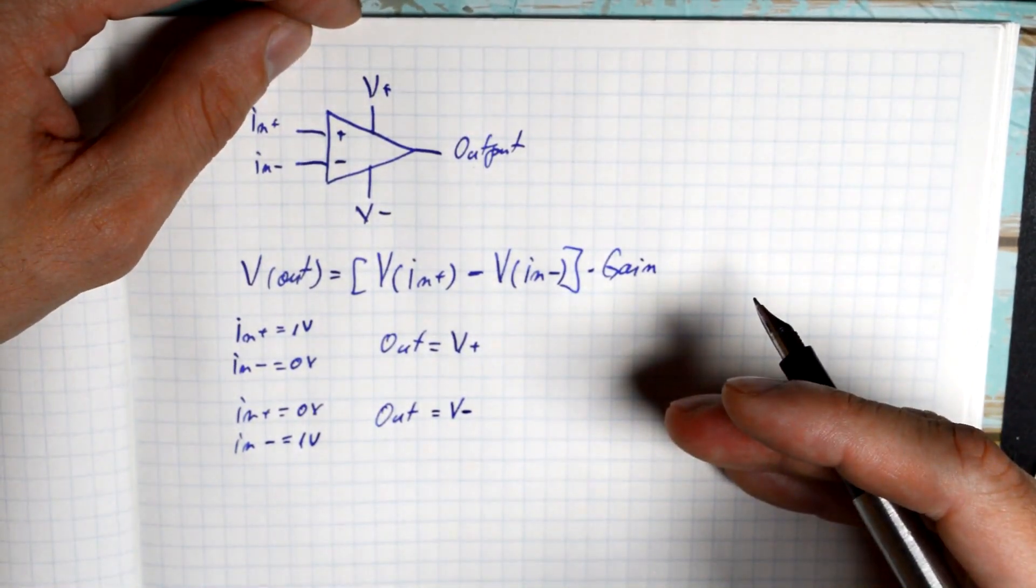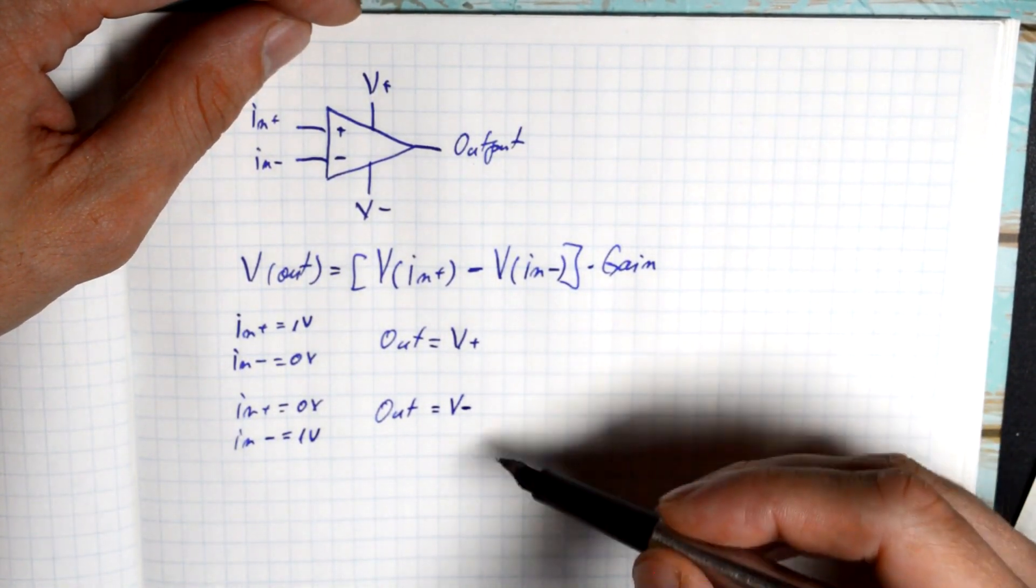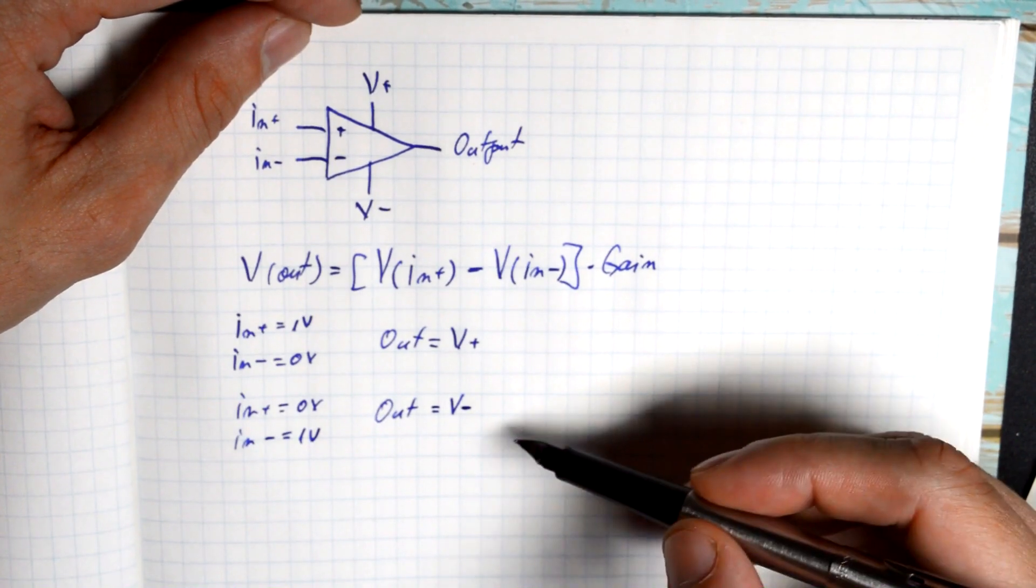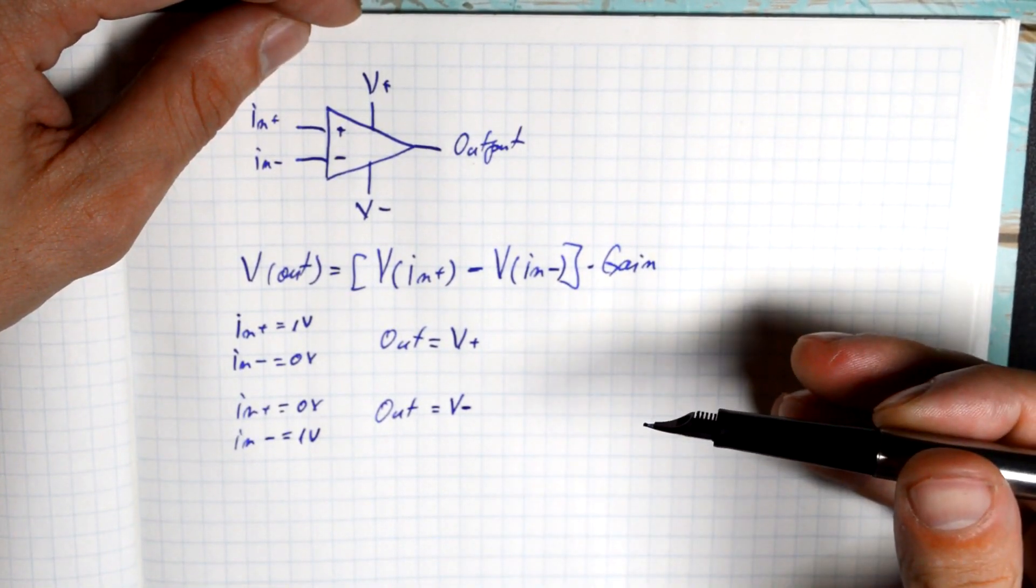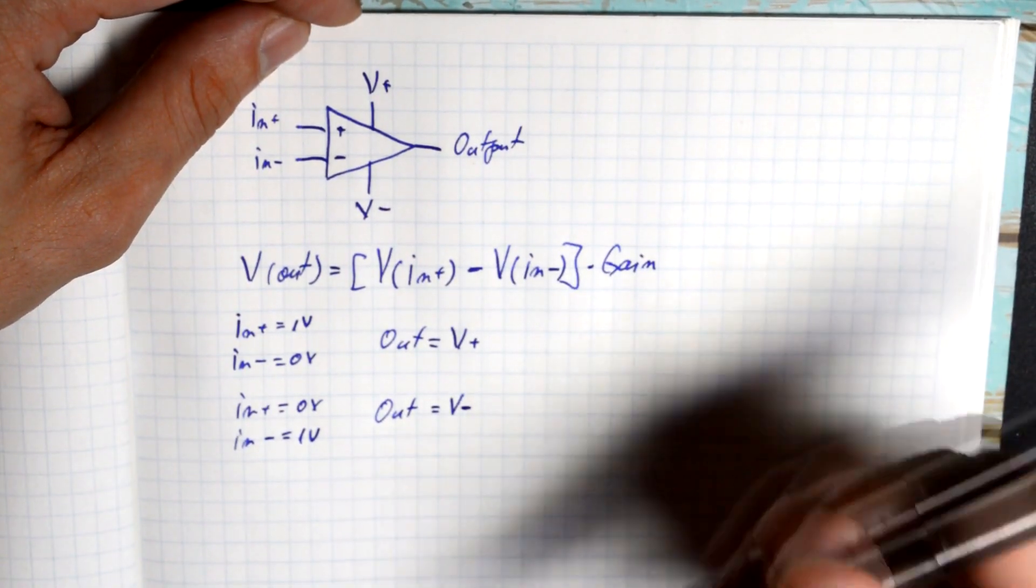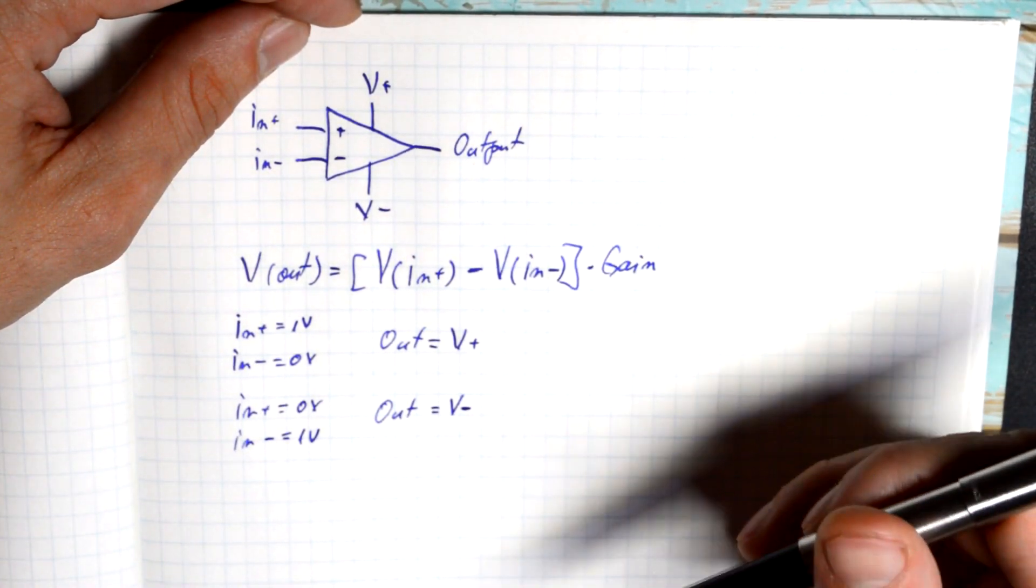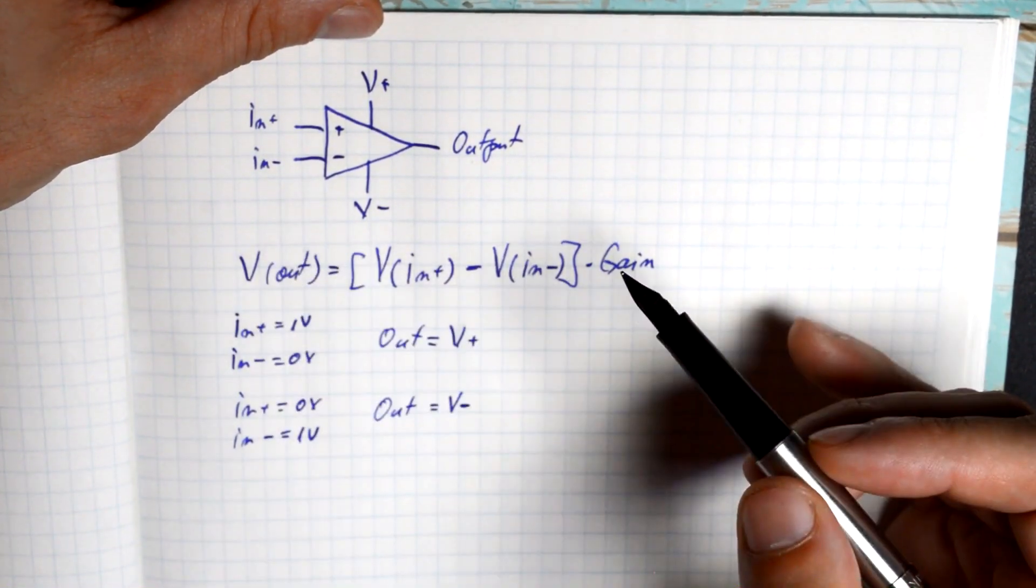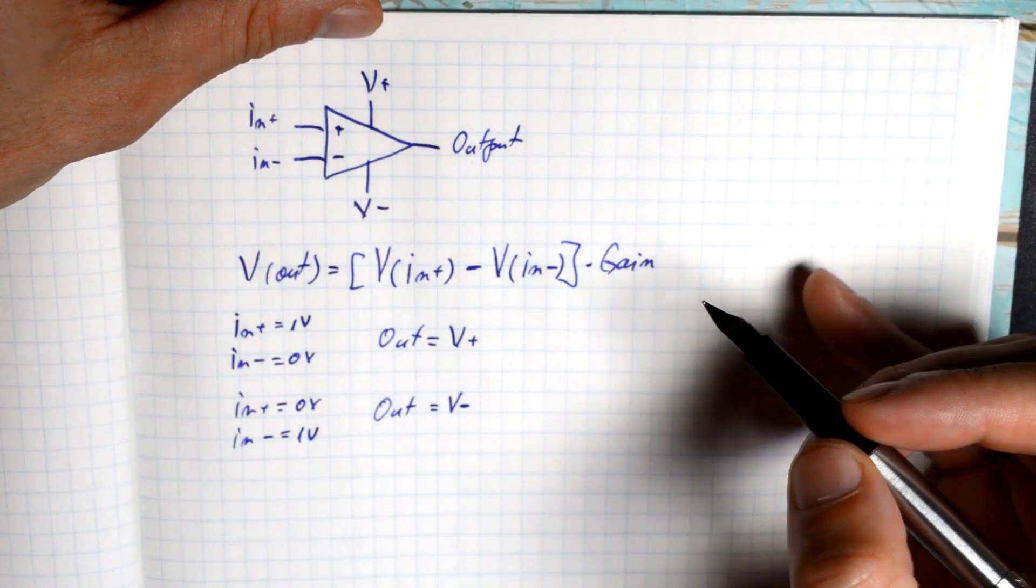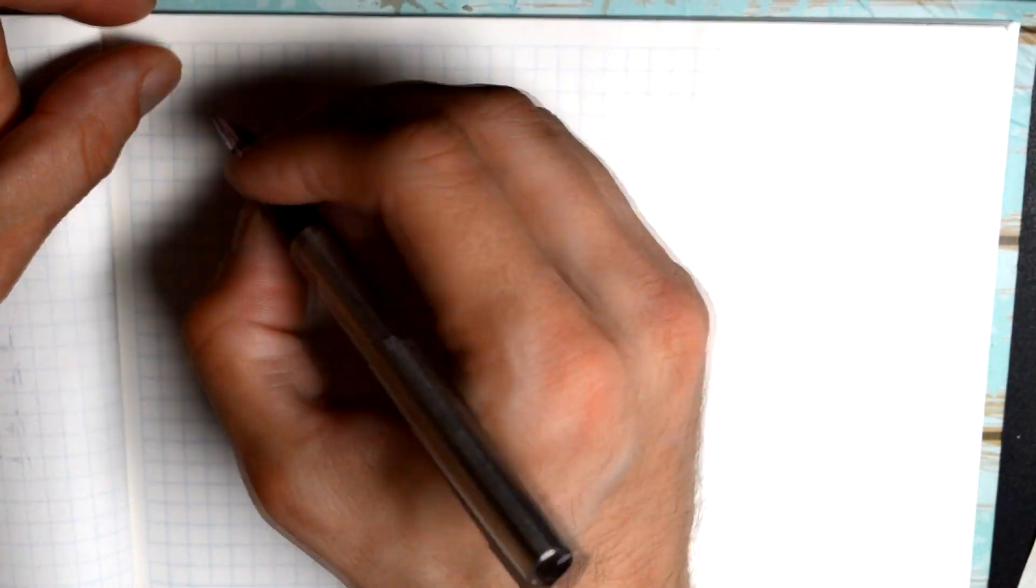This isn't very helpful. We get one extreme or the other, but we can't really get a value in between. Or can we? Well, of course we can. And this is achieved by using negative feedback, by taking part of the output, feeding it to our inverting input, either directly or through a resistor divider. Let's look at a couple examples.